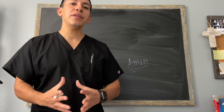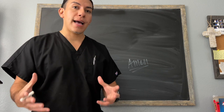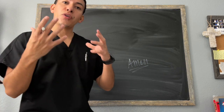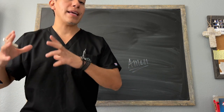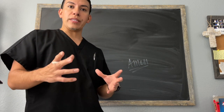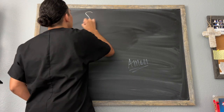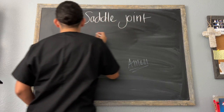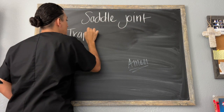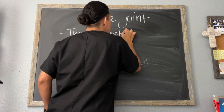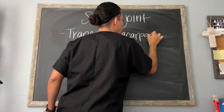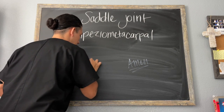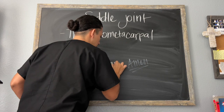Welcome back. In this video we are going to cover the saddle joint. This is our last video, so we have already covered all of the other types of joints that you would need to know before you go into the NCLEX. If you've missed any of those videos, I'd encourage you to go back and watch them. The two saddle joints we're going to cover today are the trapezio-metacarpal joint as well as the sternoclavicular joint.